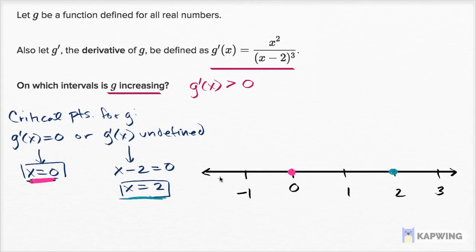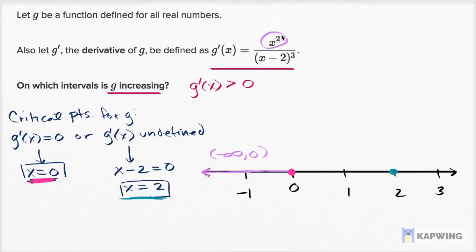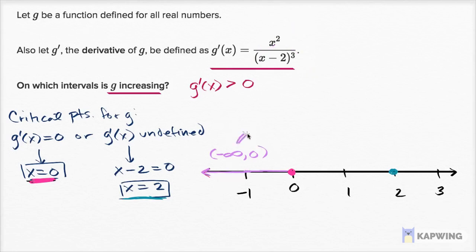For the interval from negative infinity to zero: the numerator x squared is positive for any negative value. The denominator — you subtract 2 from a negative number, still get a negative number, and a negative to the third power is negative. So you have positive divided by negative: g prime is less than zero. The function is decreasing on this interval.